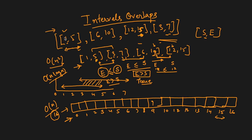Now we have created the array. We'll start iterating from left to right, and for each interval at the start time we'll add plus one, and at the end time we'll add minus one. Similarly for [6,10]: six gets plus one and ten gets minus one; [12,15]: 12 gets plus one and 15 gets minus one; [3,7]: 3 gets plus one and 7 gets minus one. This is how we fill the array. Now we iterate from left to right and at any given point keep counting - if the sum is greater than one, there is an overlap.